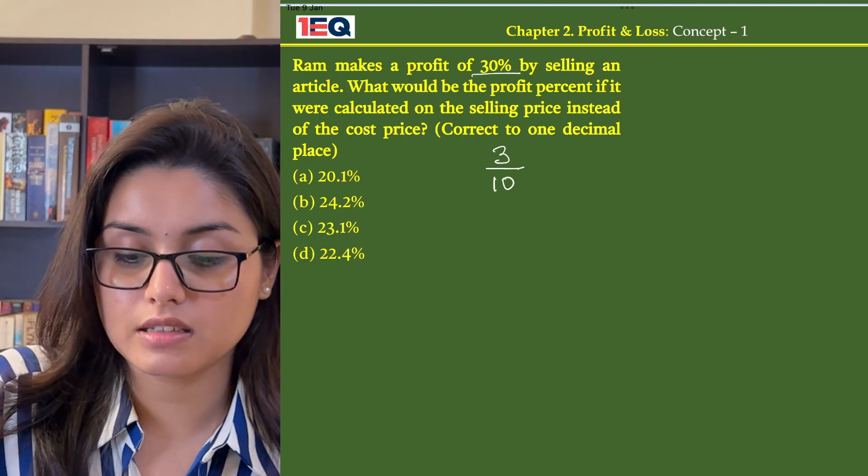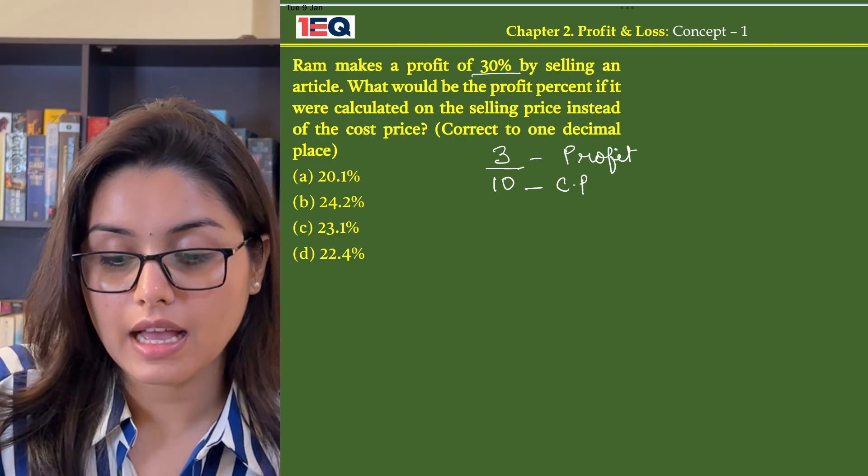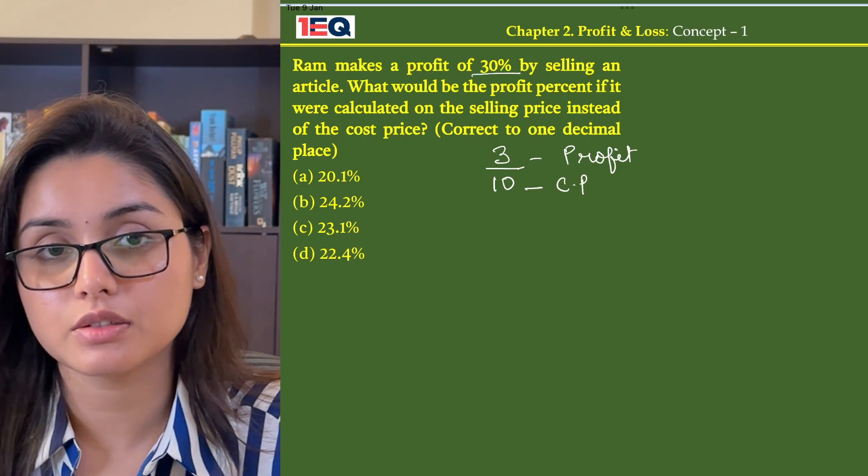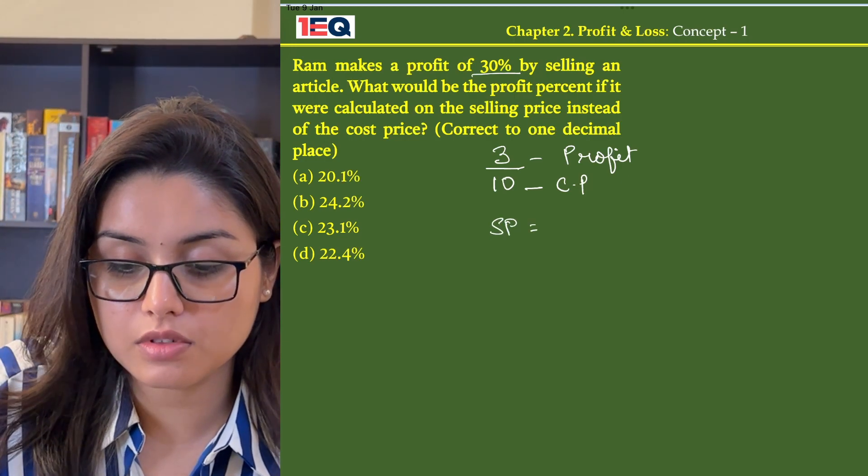If my cost price is 10, my profit will be 3, and eventually my selling price will be 10 plus 3. That is, my selling price equals rupees 13.